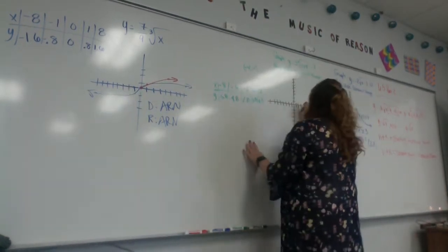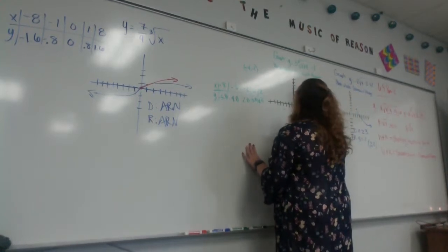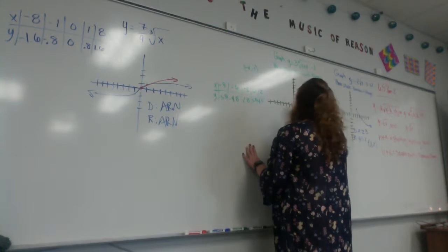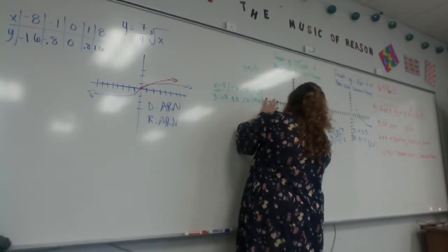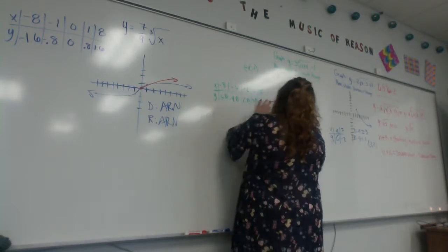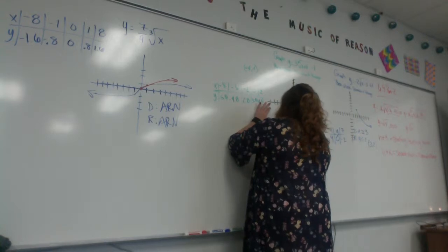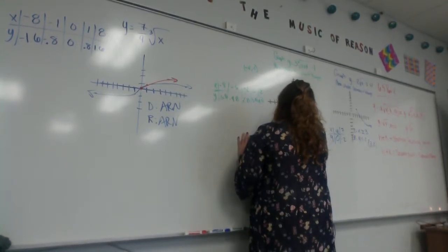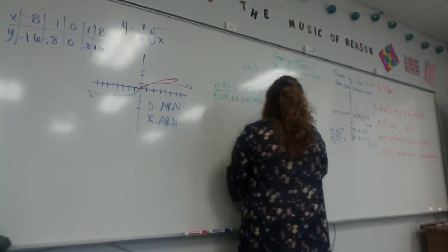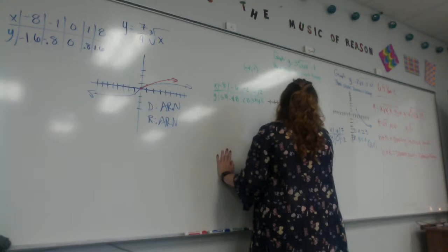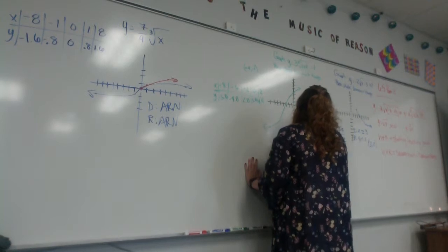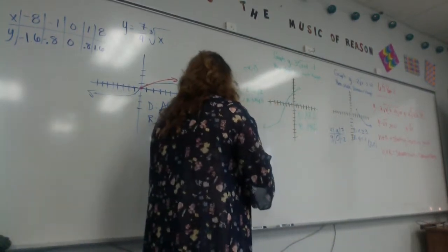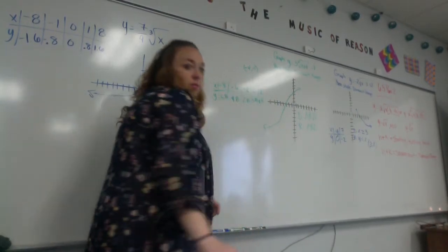So now I plot these points. 2, 4.5. 0, 3.8. Negative 2, 2.8. Negative 6, negative 4.8. And negative 8, negative 5.8. So my graph looks something like this. Do you see? Now, domain and range. Would it be all real numbers? It would be. Beautiful. That is what we are doing today.